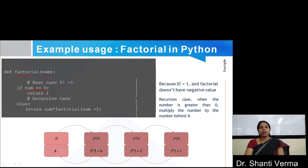Else, it returns num into factorial n minus 1. So, recursion case when the number is greater than 0, multiply the number by the number behind it.